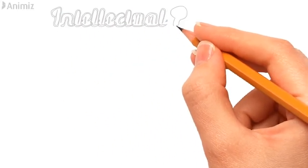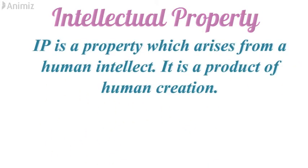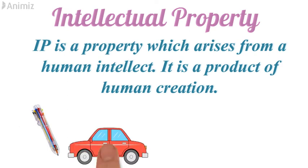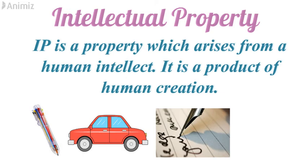First, let's understand what an intellectual property is. An intellectual property is a property which arises from human intellect. It is a product of human creation, like a pen or a car, or it can be any literary form like a poem or a book, or it can be a process of manufacturing a product.